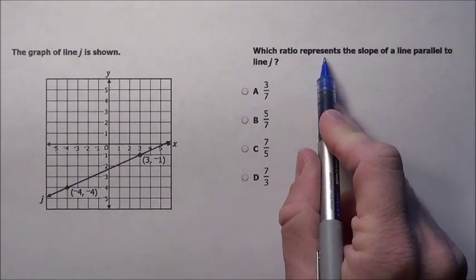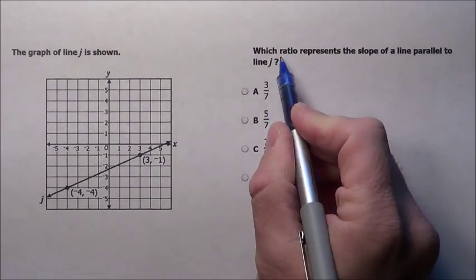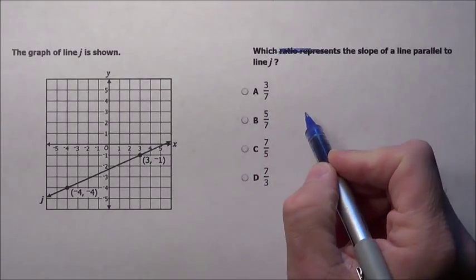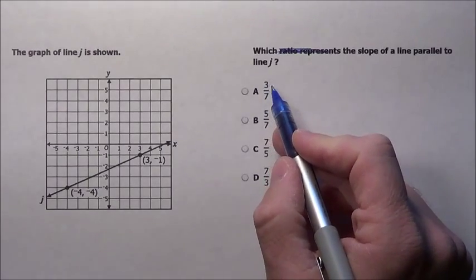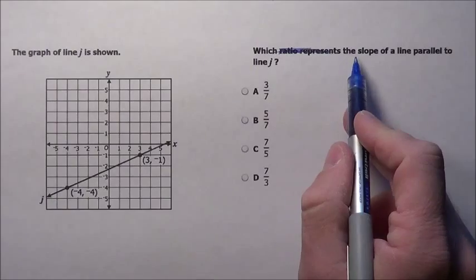It says which ratio represents the slope of the line parallel to line j. Now don't let that fool you, ratio. It's just saying, what's the slope? And it's saying ratio because in this case it's not a nice pretty 2 over 1 which gives us 2. It's some fractional part. That's all it's saying.